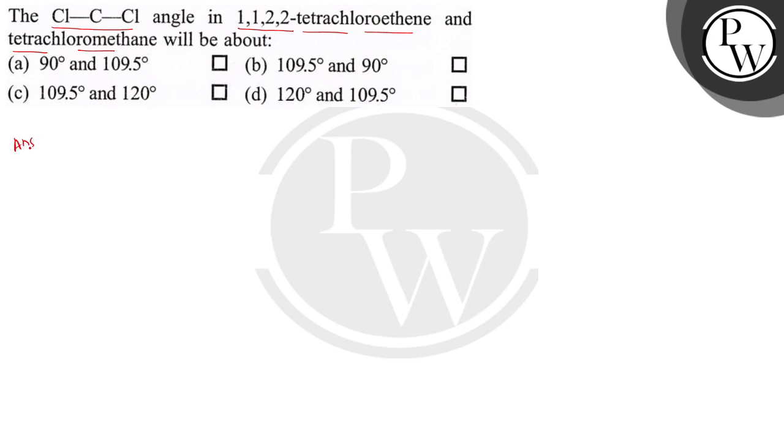Okay, so let's do the question. First of all, we will write down the structure of 1,1,2,2-tetrachloroethane. The structure is C double bond C. This is 1,1,2,2-tetrachloroethane. And tetrachloromethane has the structure C with four Cl atoms - this is tetrachloromethane.